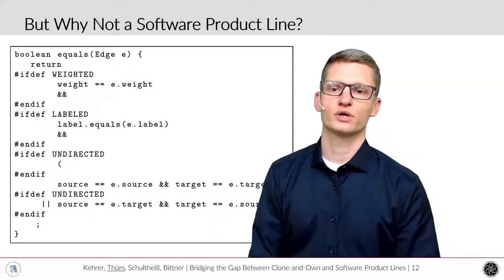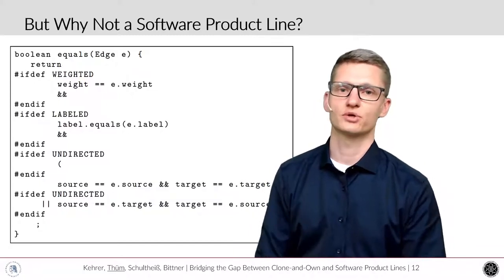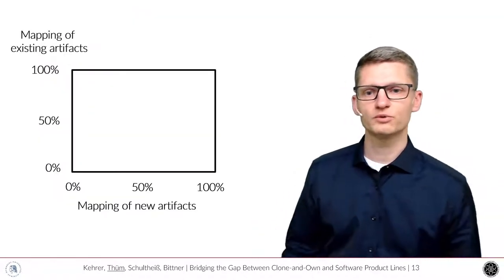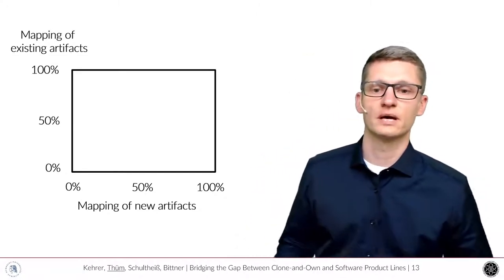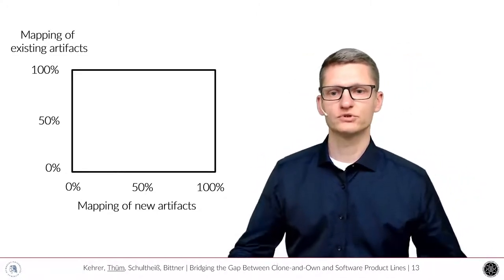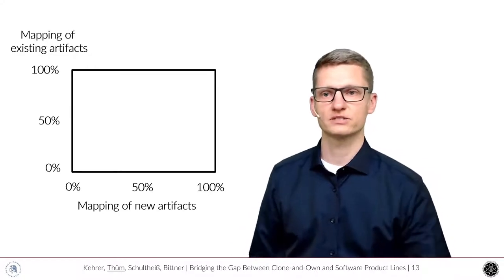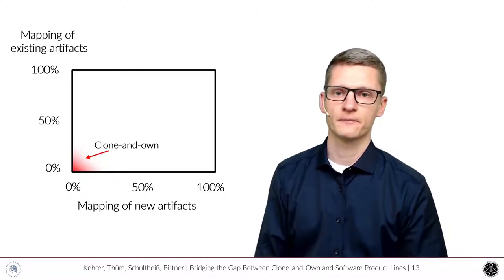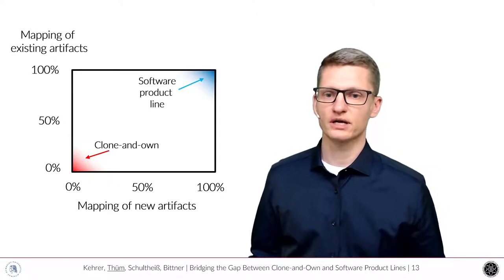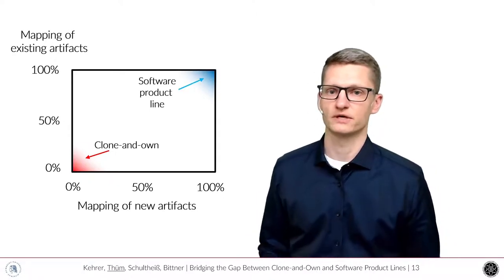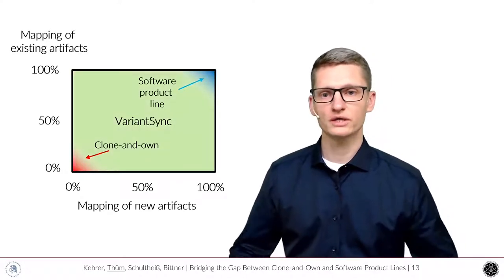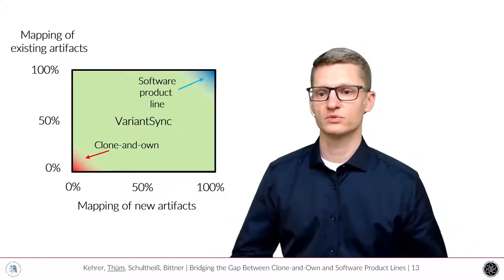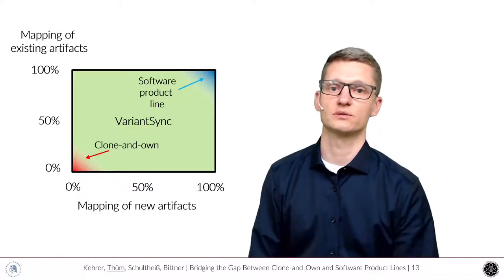To understand why a software product line is not feasible in all cases and to understand the potential impact of VariantSync, let me drive you through a number of diagrams. First of all, what we aim to improve is the situation in terms of the mapping of artifacts. Right now we have two dimensions. We have mapping of potential new artifacts or of existing artifacts. In clone-and-own development, typically we don't have any mapping at all. This is a different situation in software product line where every new artifact and all the existing artifacts are mapped. With VariantSync, we try to support everything in between, meaning that we can increase the mapping with newly added artifacts and over time also increase the mapping for existing artifacts.